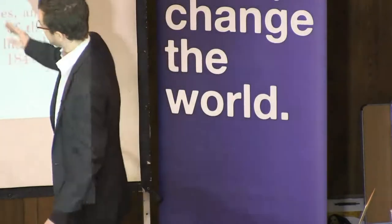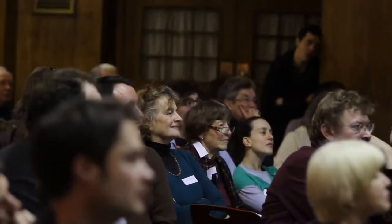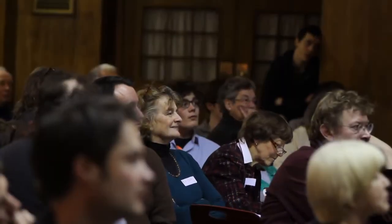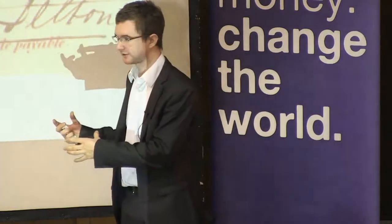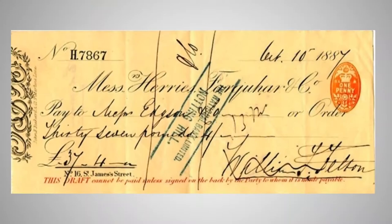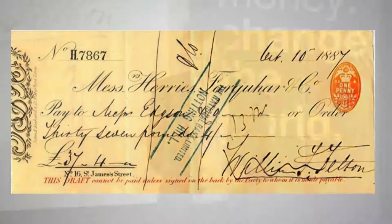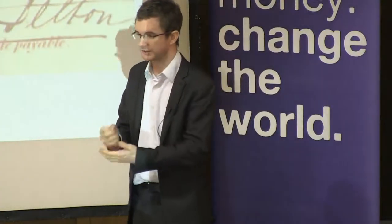So they passed a piece of legislation, the Bank Charter Act, which said from this point on, only the Bank of England will have the authority to create paper money. But they missed something out, because paper money isn't the only way that you can make payments. With the increasing use of checks, people had a way of making payments using the numbers in the ledger books of the banks — the accounting entries — without actually needing the real paper or metal money.